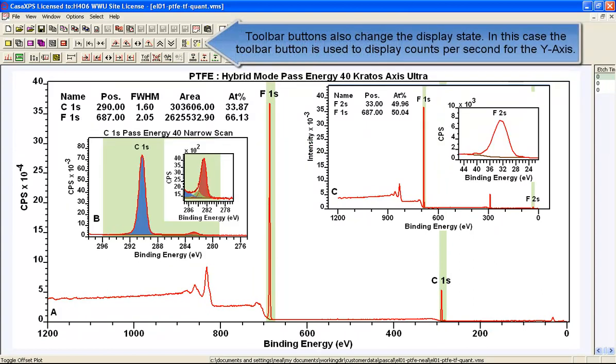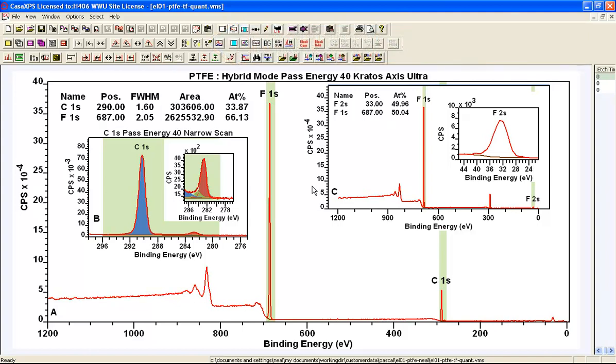So I'll go around and I'll just turn everything to counts per second rather than intensity. So I indicate the tiles and click the counts per second button. So now I've got the display the way I'd like it. It's mostly in the form that I'd saved it previously.